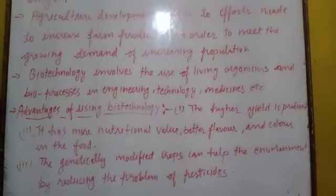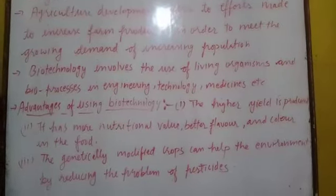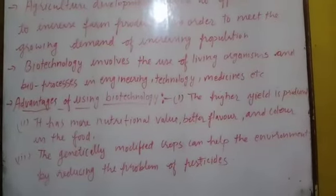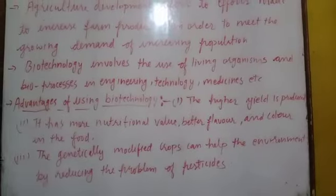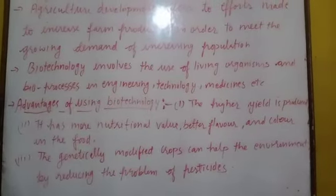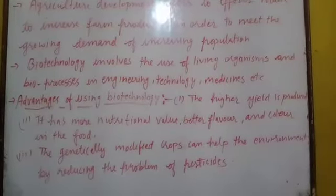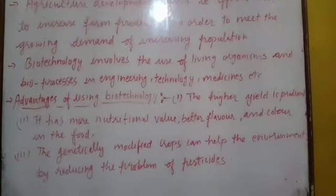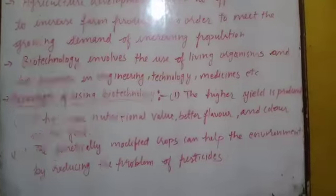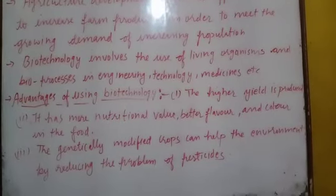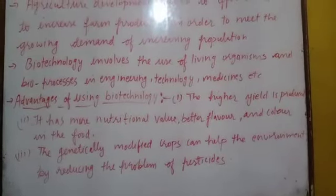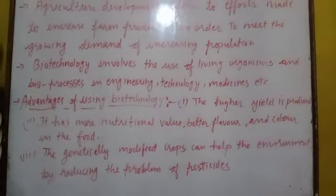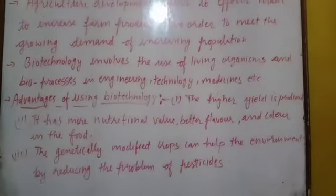Scientists believe that genetically modified crops can help the environment by reducing the problem of pesticides. These are the benefits or advantages of using biotechnology. However, some critics of biotechnology point to the adverse effects of genetically modified crops on the environment.